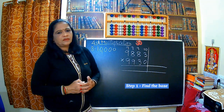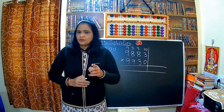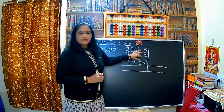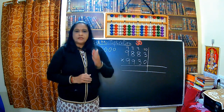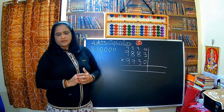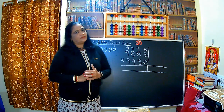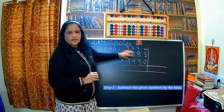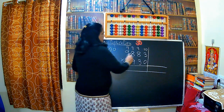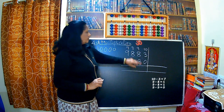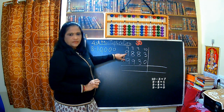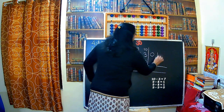The steps are the same. First step: find the base. Second step: subtract the number by the base and write it on the right-hand side. The given numbers are 9883 multiplied by 9930. These numbers are very near to 10,000, so the base is 10,000. Applying Nikhilam Sutra to 9883: 10 minus 3 is 7, 9 minus 8 is 1, 9 minus 8 is 1, 9 minus 9 is 0. So the deficit is 0117.